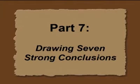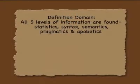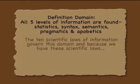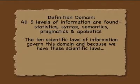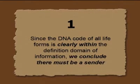You will see there are very strong conclusions which we can make from the laws of nature about information. All five levels of information are found: statistics, syntax, semantics, pragmatics, and apobatics. And if we are inside of the definition domain, then we can make very strong conclusions. Since the DNA code of all life forms is clearly within the definition domain of information, we conclude there must be a sender. It is a very important conclusion. If somebody would say life is coming without a sender, we can say from the viewpoint of the law of nature — it is a wrong idea.